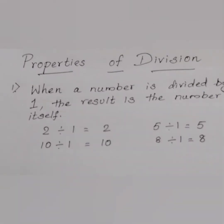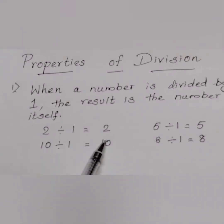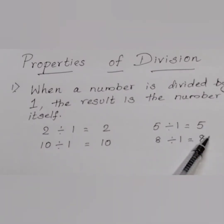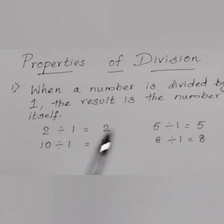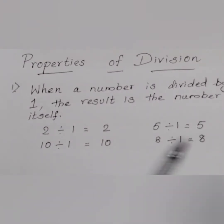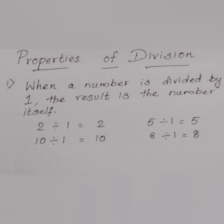I will show some examples. 2 divided by 1 is equal to 2. 5 divided by 1 is equal to 5. 10 divided by 1 is equal to 10. When we divide 10 by 1, we get the same number 10 as our answer. 8 divided by 1 is equal to 8. So, have you understood this first property?